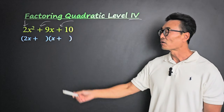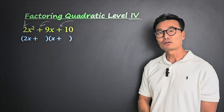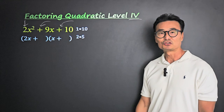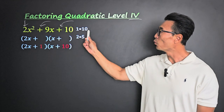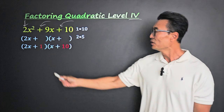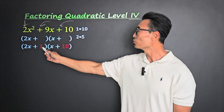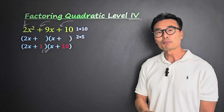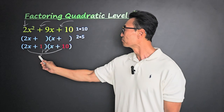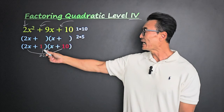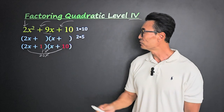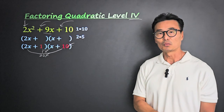Next, we write down all pairs of numbers that multiply to 10: simply 1 and 10, and 2 and 5. Let's try 1 and 10 first. We multiply the two inner ones: 1 times x is 1x. Then the two outer ones: 2x times 10 is 20x. Adding 20x and x gives 21x, which is not the 9x we're looking for — so that's the wrong one.